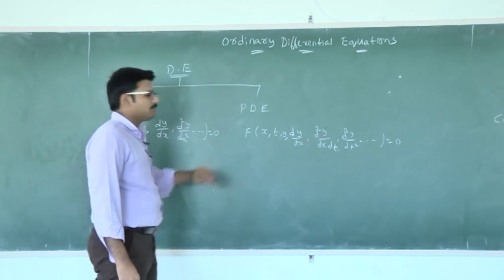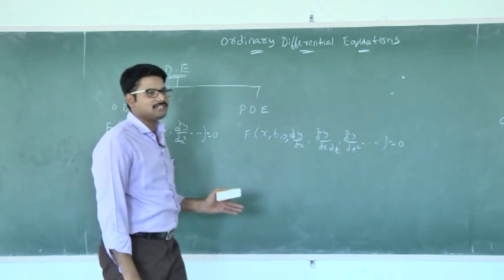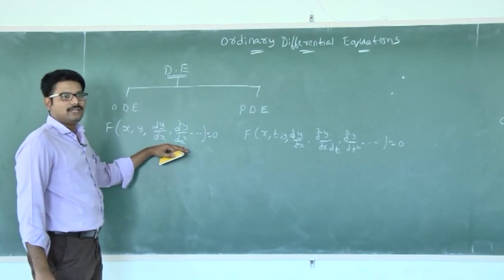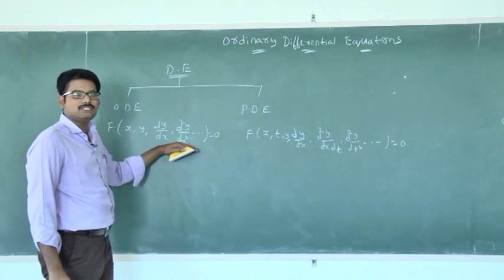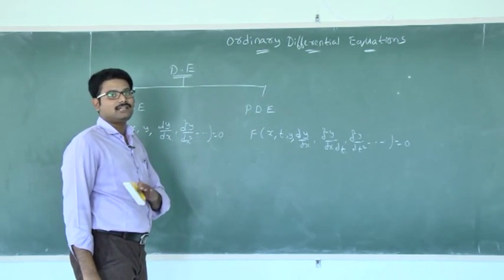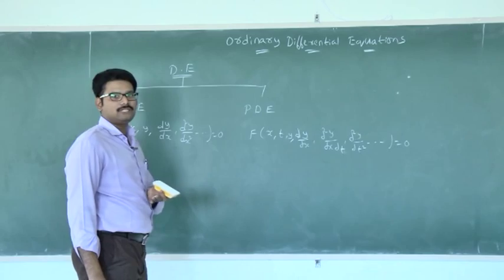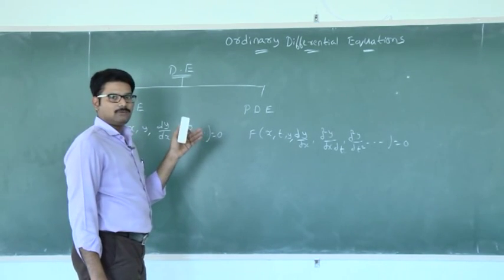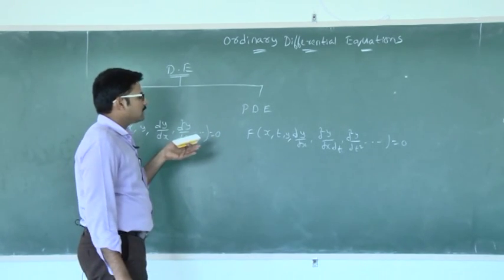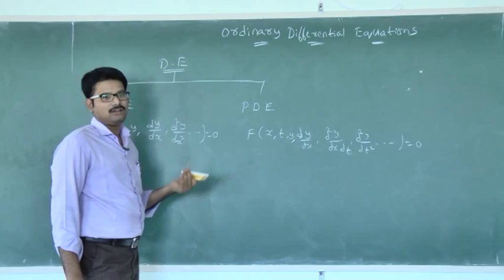These are the basic two types of differential equation. We know that for any equation there is a solution, and likewise for a differential equation there is also a solution. We can trace a solution for an ordinary differential equation by reducing it to some standard forms. Let us go through a diagrammatic representation of the methods to attain a solution for an ordinary differential equation.